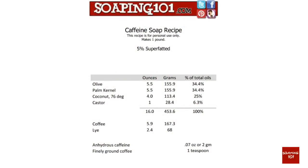Our recipe today consists of 5.5 ounces of olive oil, 5.5 ounces of palm kernel oil, 4 ounces of coconut oil, 1 ounce of castor, 5.9 ounces of strongly brewed coffee, 2.4 ounces of lye, 2 grams of anhydrous caffeine — I'll put the link below where you can purchase this — and 1 teaspoon of finely ground coffee.